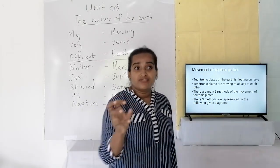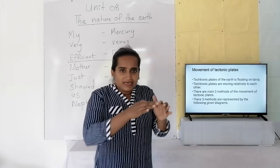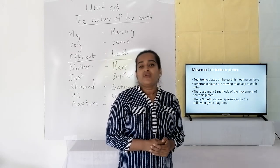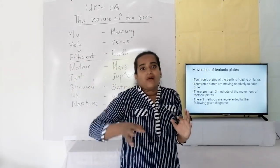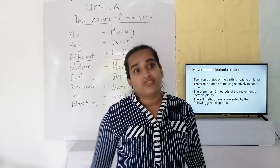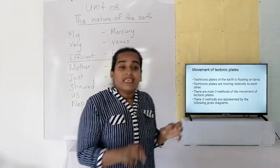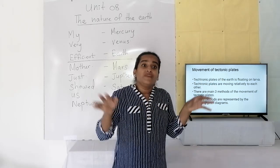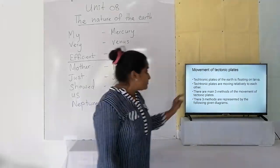Now we have to learn about the movement of tectonic plates. The Earth's crust is made out of different segments called tectonic plates, and these tectonic plates float. As a simple example you can try at home: take a bucket of water and put some strips of polythene on it — you can see the polythene strips float on the water. Similarly, the tectonic plates on the crust float on the lava, and they move relative to each other.